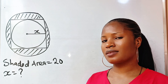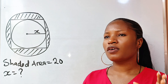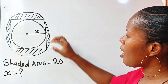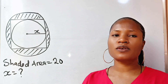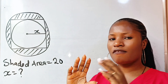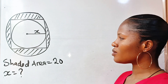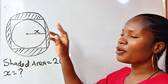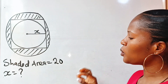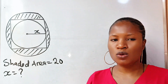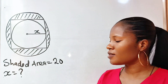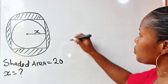Let us read the mind of the examiner. For the fact that the examiner gave us the area of the shaded portion shows that this area is going to play a vital role for us to get the value of x. So first of all, the area of the shaded portion is equal to what?